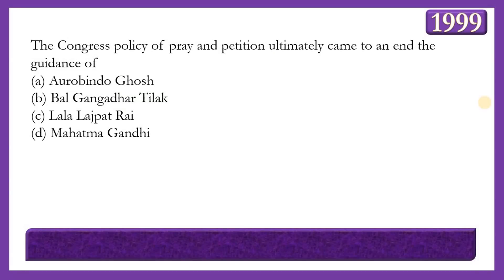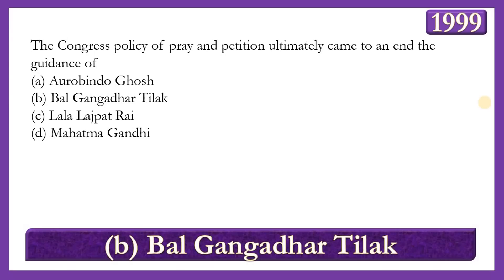Next question: The Congress policy of prayer and petitions ultimately came to an end under the guidance of whom? Options: Aurobindo Ghosh, Bal Gangadhar Tilak, Lala Lajpat Rai, or Mahatma Gandhi. The answer is option B — Bal Gangadhar Tilak. The partition of Bengal and the Swadeshi movement marked the beginning of a new era in Indian nationalism, and under Tilak's guidance, the policy of prayer and petitions came to an end.